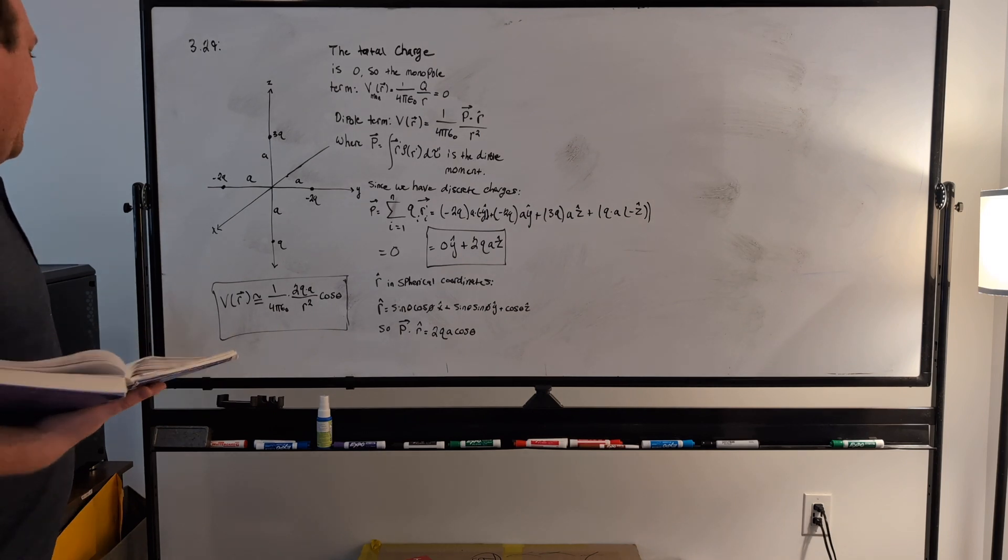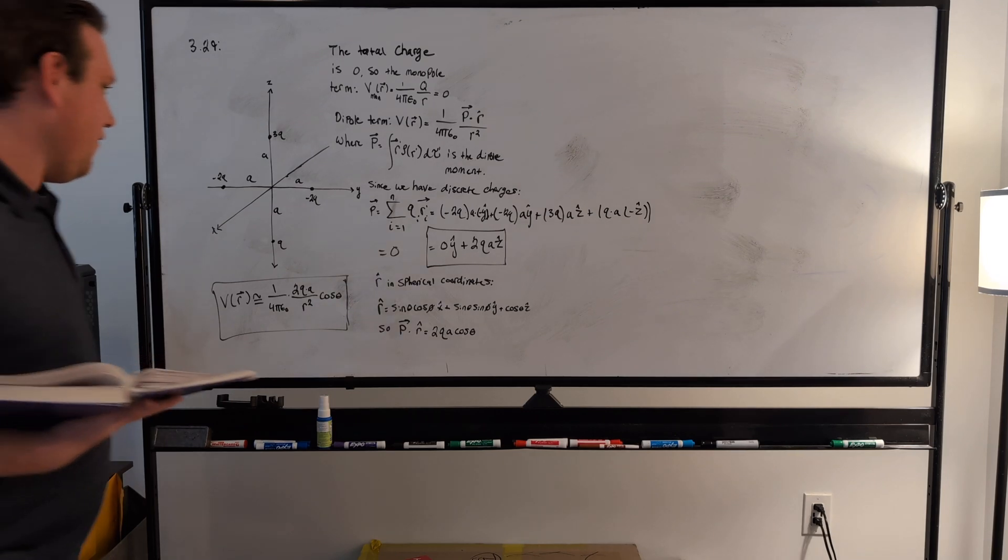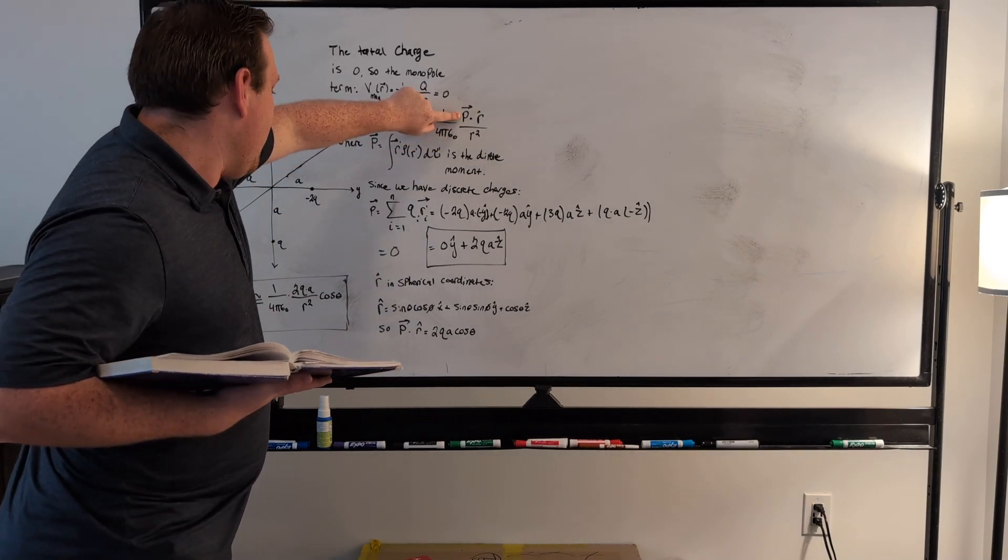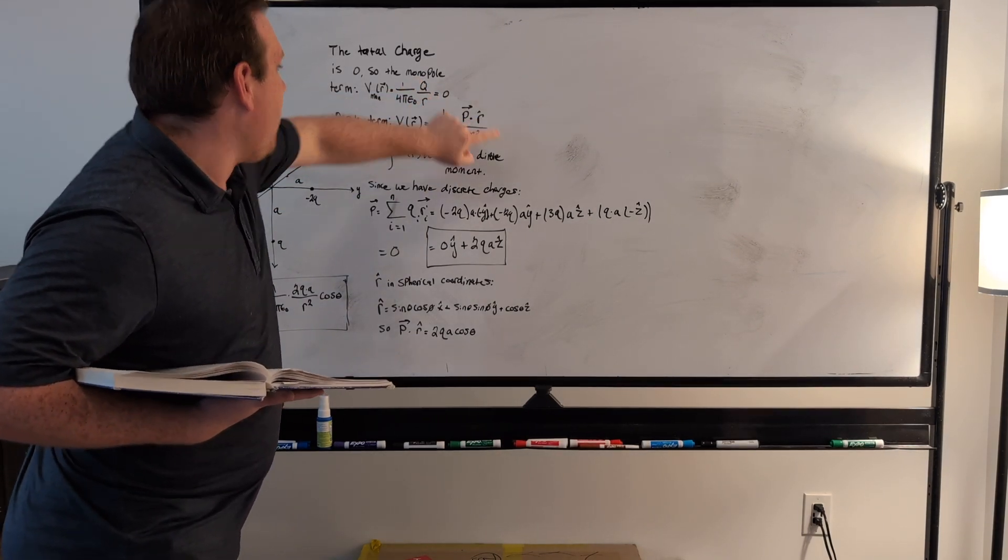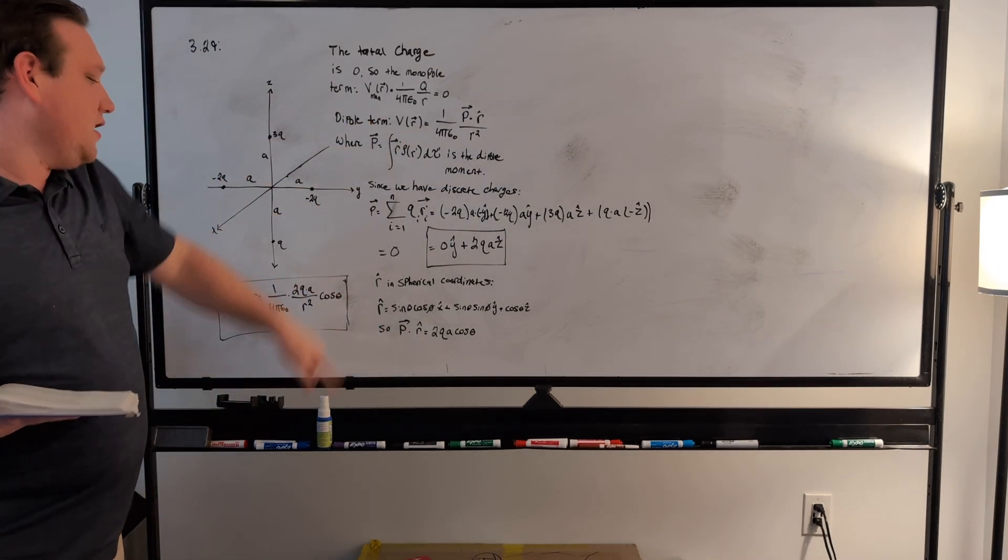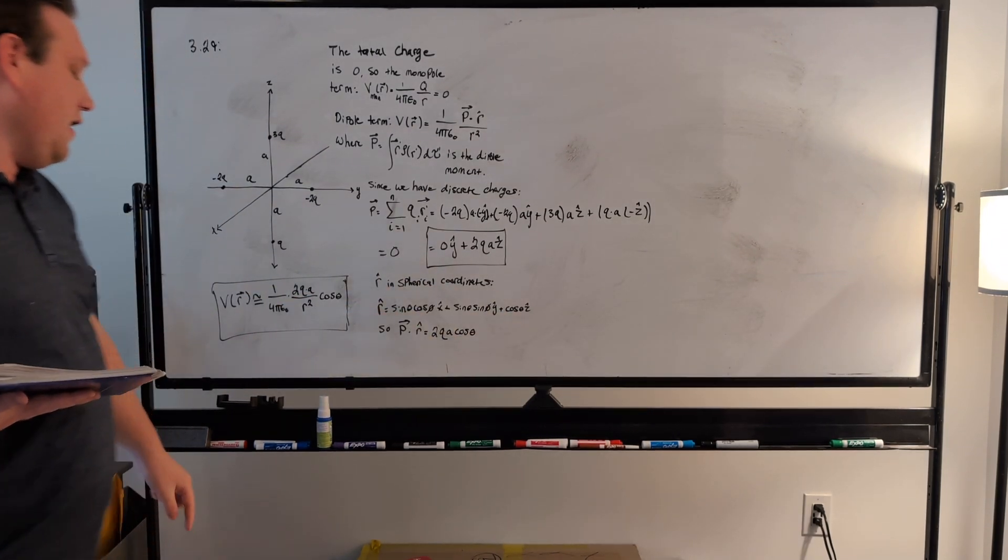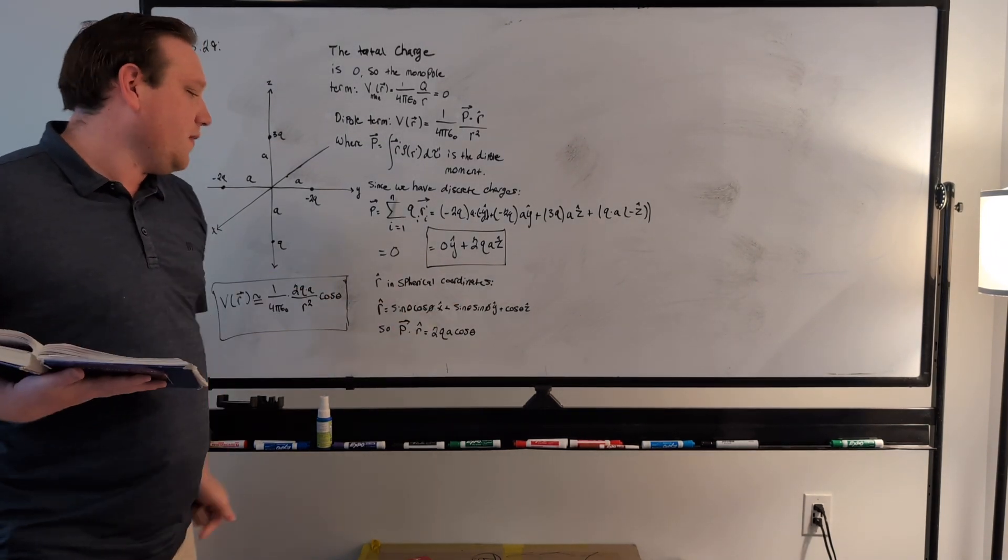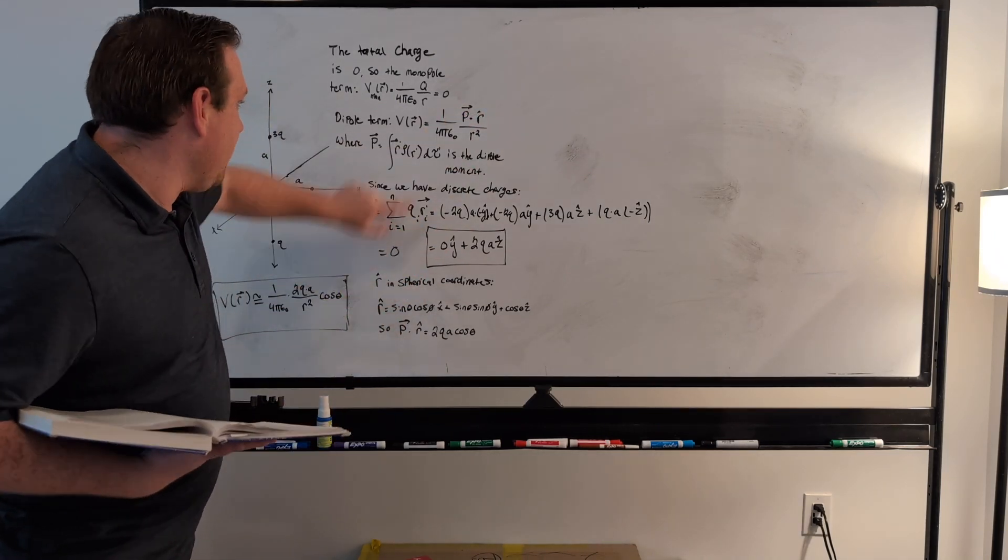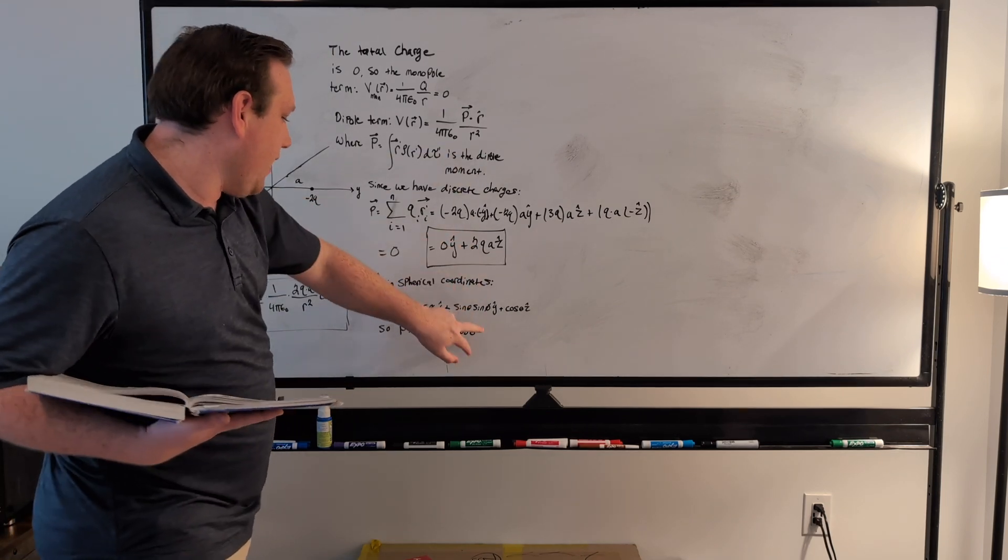And essentially what we do from here is, we have our p here, but now we need to dot it with r-hat because we're trying to find this potential. So if you express r-hat in spherical coordinates, you get this. You express r-hat in spherical coordinates in Cartesian, and you dot it. We're just going to be left with the z-hat term when we do the dot product between this and r-hat.